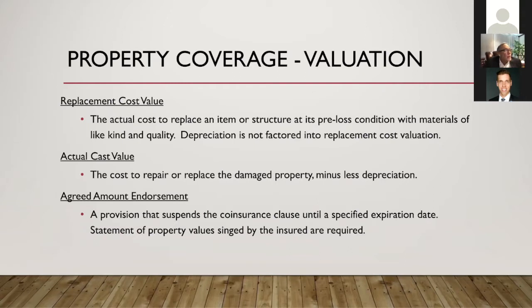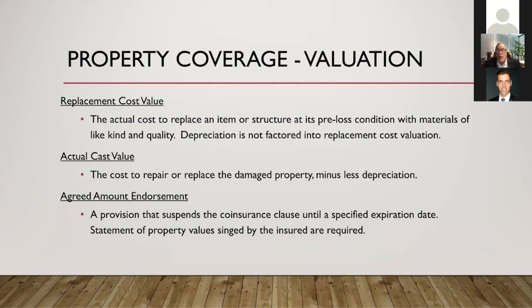The first thing on everybody's list is replacement costs. We have to insure everything for replacement cost, which simply means new for old, no depreciation, like kind, like quality, like materials. Older associations with impaired roofs sometimes have to accept ACV valuation, but the way we smooth it over is the application of an agreed amount endorsement.